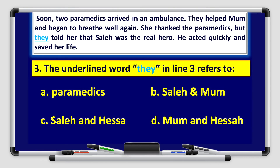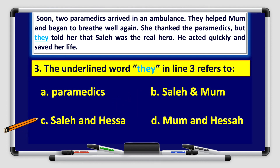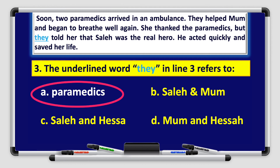Number three: The underlined word they in line number three refers to A. Paramedics, B. Saleh and mom, C. Saleh and Hissa, D. Mom and Hissa. Let's go back to the paragraph: two paramedics arrived in an ambulance, they helped mom. She thanked the paramedics but they told her Saleh was the real hero. So they refers to the paramedics — the answer is A.